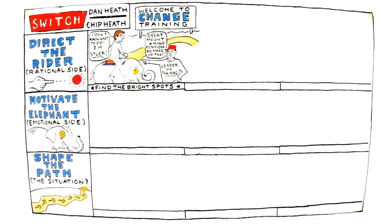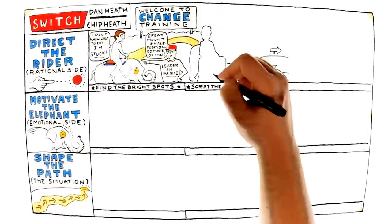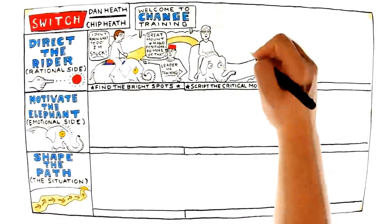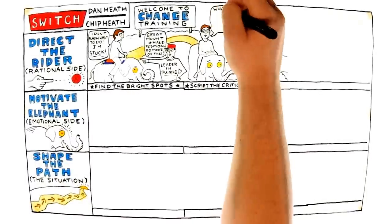Script the critical moves. Ambiguity or uncertainty exhausts the rider because he or she has to tug the reins of the elephant, expending energy trying to steer the elephant down a new path.